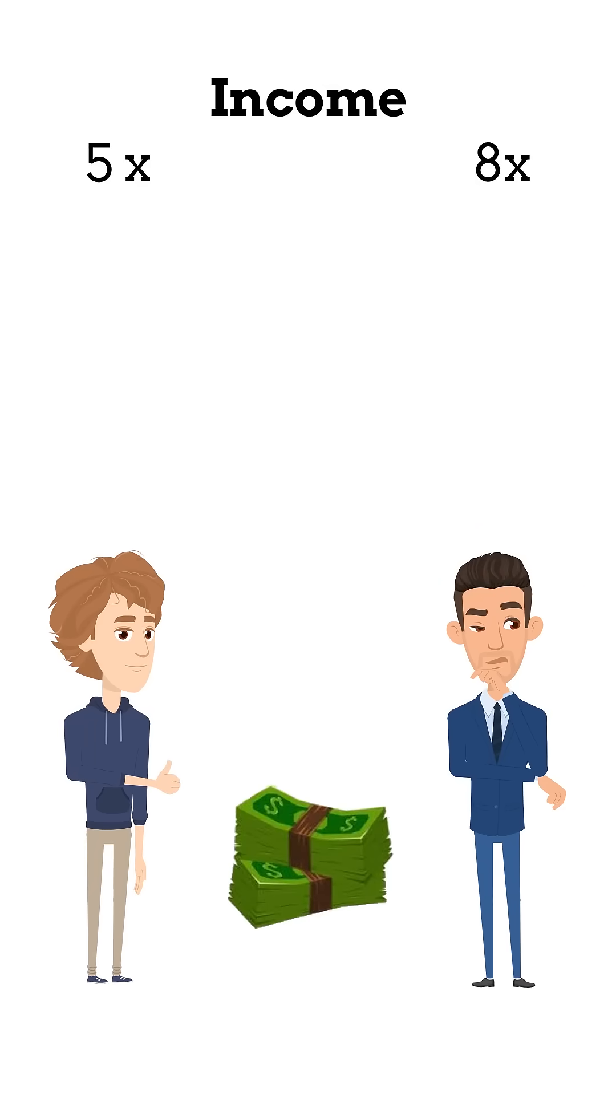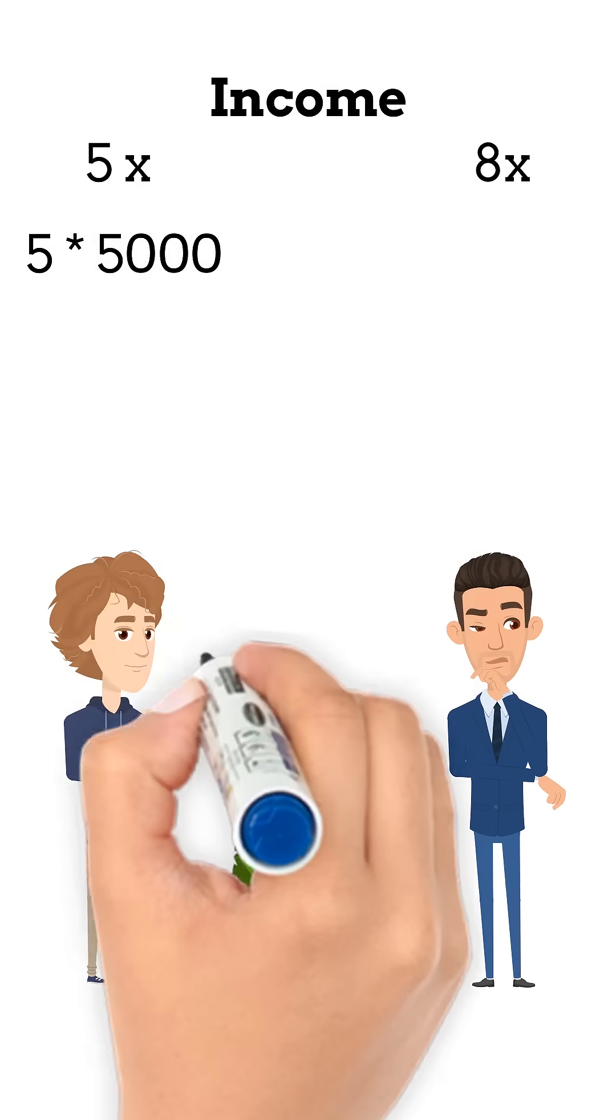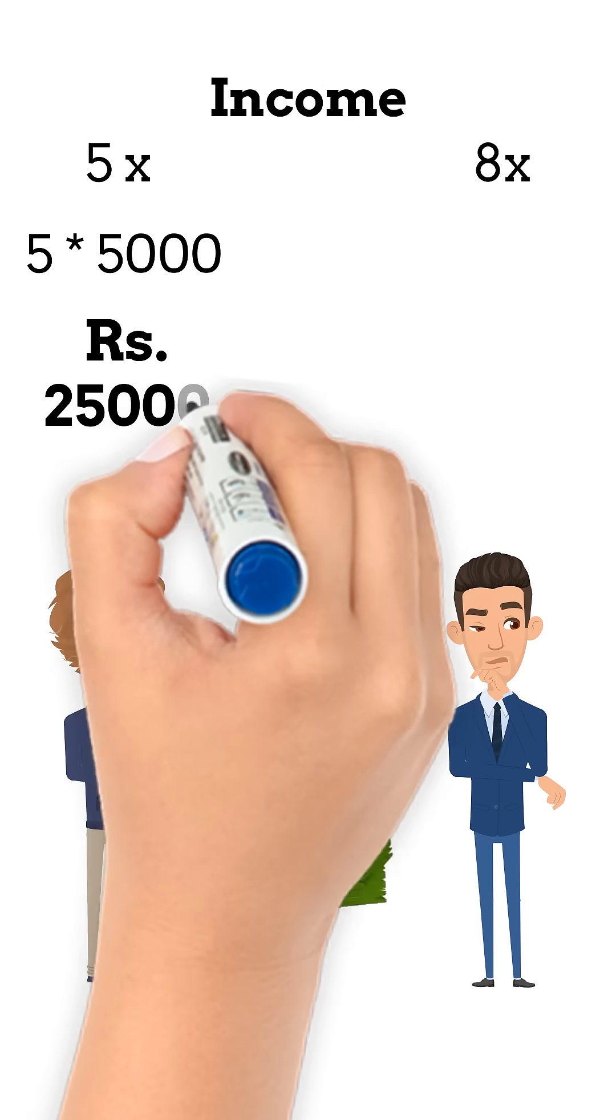Resubstituting the value of x, income of A is 5 multiplied by 5,000, that is 25,000 rupees.